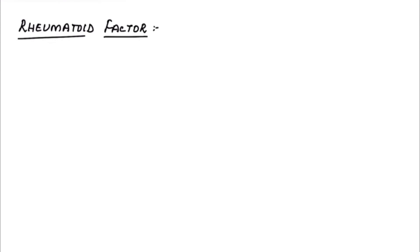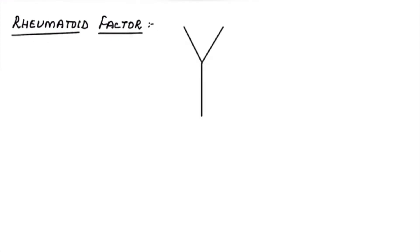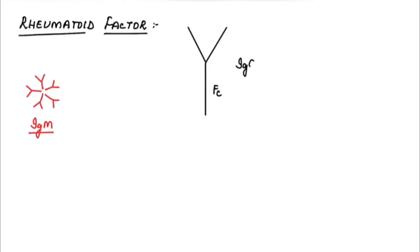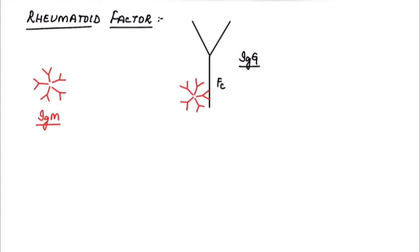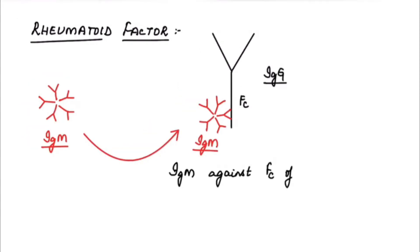Now we will look at other conditions associated with rheumatoid factor. Rheumatoid factor is the antibody directed against the Fc fragment of an immunoglobulin. For example, if an IgM is directed against the Fc fragment of IgG, it is known as a rheumatoid factor. So an antibody — IgM or IgG — directed against the Fc fragment of an immunoglobulin is called a rheumatoid factor.